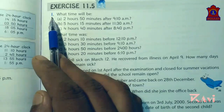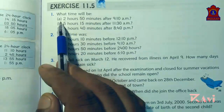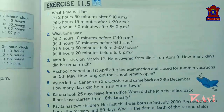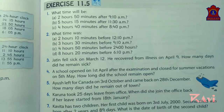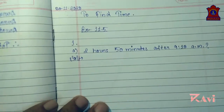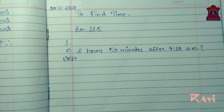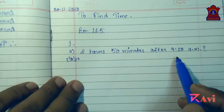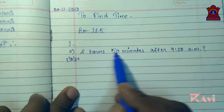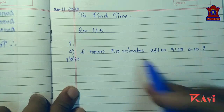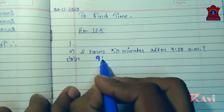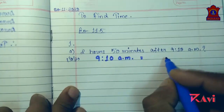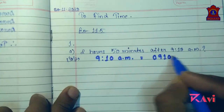Look at question number one: what time will be 2 hours 50 minutes after 9:10 a.m.? So let's find out. First of all, we will convert this time to 24-hour clock. So 9:10 a.m. equals 0910 hours.